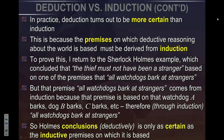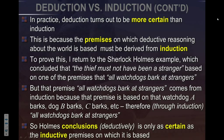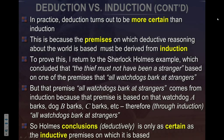Let's go back to the Sherlock Holmes example from last class. Holmes concluded the thief must not have been a stranger, based on the premise 'all watchdogs will bark at strangers.' But how did he come up with that? He came up with it inductively — in his experience, this watchdog barked at a stranger, that watchdog barked at a stranger — and he came to the inductive conclusion that all watchdogs bark at strangers. He used induction to create a deductive argument as to why the thief was not a stranger.